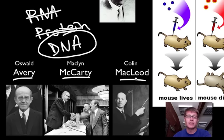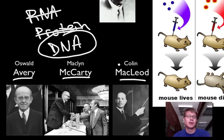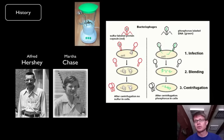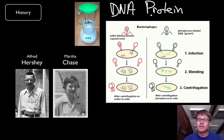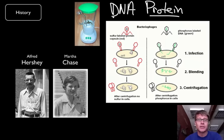So Avery, McCarty, McLeod figured out that DNA was the transforming factor. Now most of their work was largely ignored, because most scientists thought DNA was not complex enough to be the stuff of life — it only has four different letters. Most of the argument was about whether it was DNA or proteins being transferred, and proteins are very complex. So most people were thinking it was proteins that were the genetic material, not DNA.